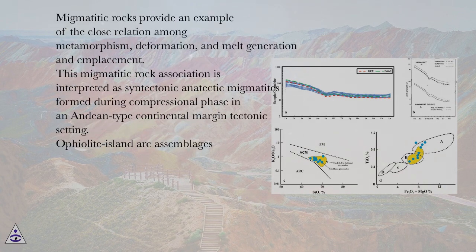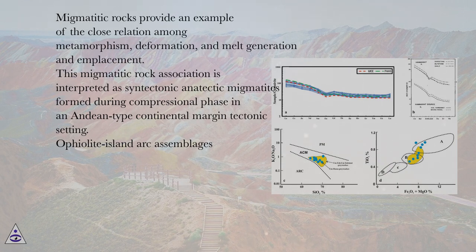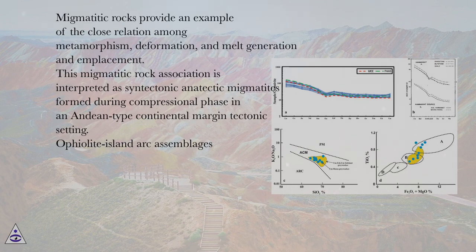Migmatitic rocks provide an example of the close relation among metamorphism, deformation, and melt generation and emplacement. This migmatitic rock association is interpreted as syntectonic anatectic migmatites formed during a compressional phase in an Andean-type continental margin tectonic setting.